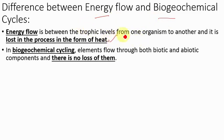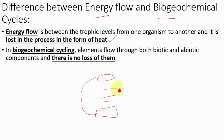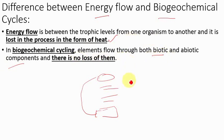Energy is lost between different trophic levels through metabolic processes and as heat. But in the biogeochemical cycle, elements go through both biotic and abiotic components — whereas in energy flow it is only through biotic components. So there is no loss of nutrients; the entire element or chemical is circulated. Not even a single percent of the mineral is lost in biogeochemical cycling. This is the major difference between energy flow and biogeochemical cycling.